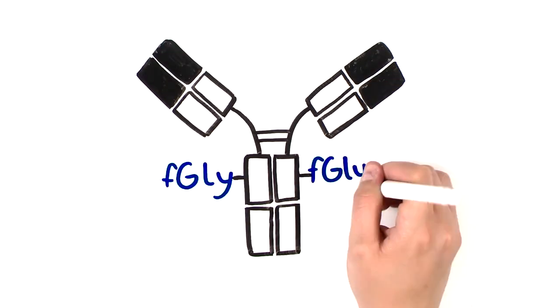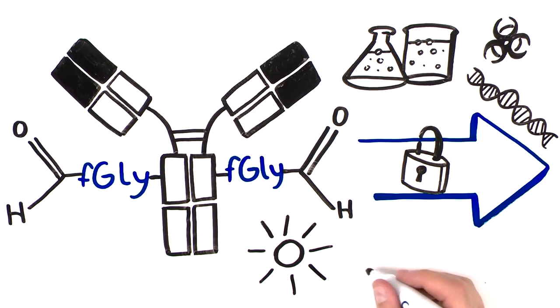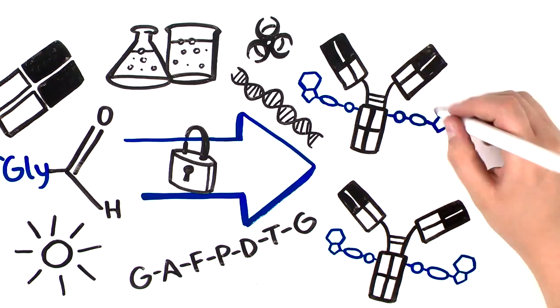Since the chemistry only reacts with aldehydes, attachment of the payload only occurs at the formal glycine, creating a very uniform product.